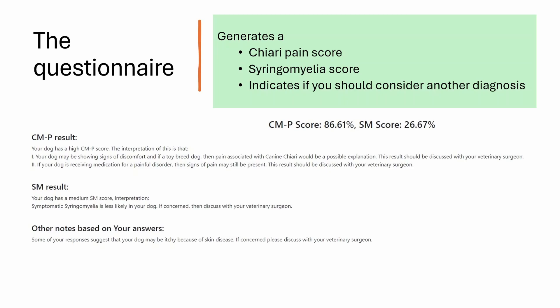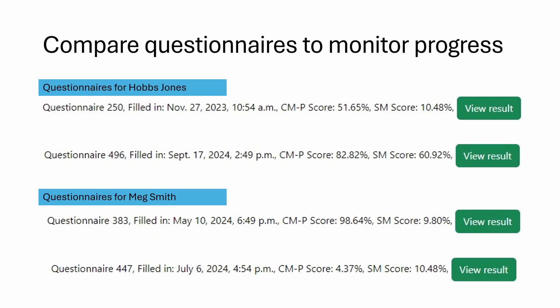Based on your answers, the tool may also suggest something else is going on — for example, that the dog is scratching due to skin disease — and direct you to discuss that with your veterinary surgeon. It also allows you to monitor progress over time. Hobbs initially had a low Chiari pain score and a low syringomyelia score, but this has now increased, suggesting more pain or a syrinx developing. Meg, on the other hand, was on treatment — initially a very high pain score — and after analgesic medication was prescribed, her pain score is now much reduced.